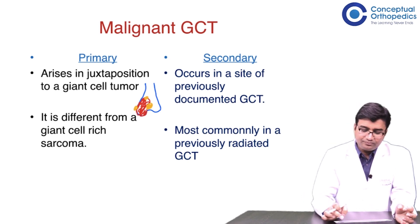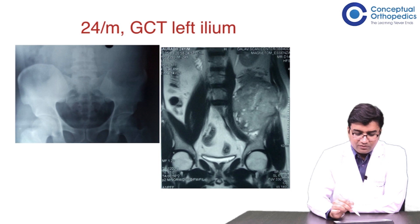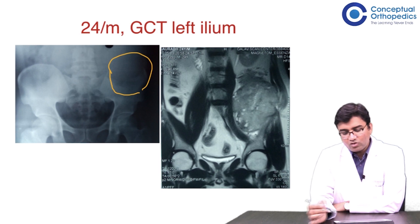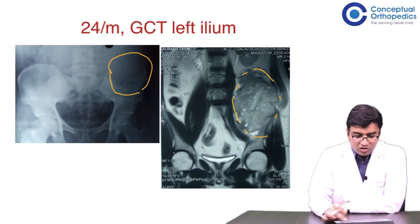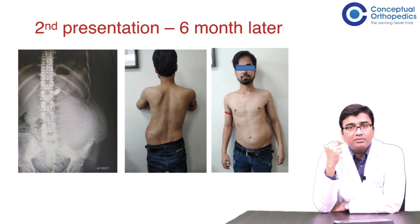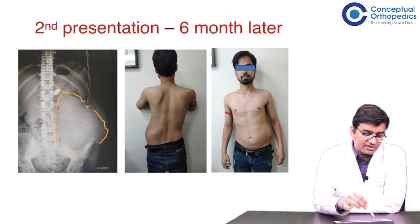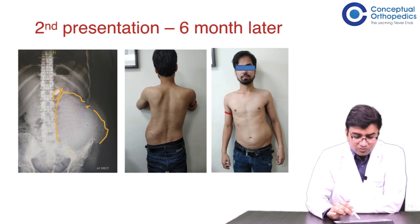Let us see one example of how we deal with this. A young gentleman presented with a lesion in the ilium — a lytic lesion with extra-osseous component seen on MRI, arising from the iliac bone with a large soft tissue component. He was lost to follow-up at another hospital and returned after six months with dramatically increased swelling, reaching up to the rib cage, extending inside, and he also developed a large renal stone.